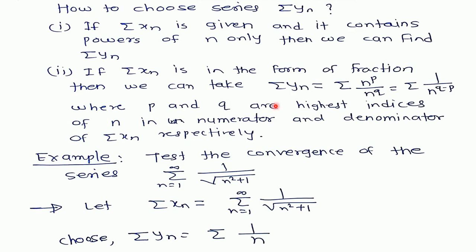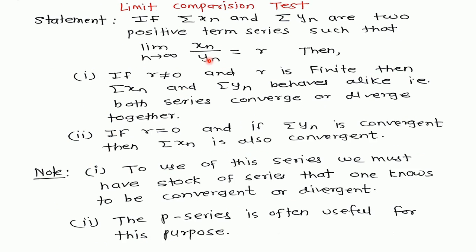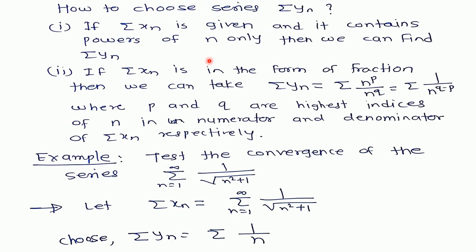If series xn is given, we have to find the series yn to check convergence or divergence. Here is a method to choose yn: if xn contains powers of n only and is in the form of a fraction, then series yn equals n^p / n^q, which equals 1/n^(q−p). Here p and q are the highest powers of n in the numerator and denominator of xn respectively.